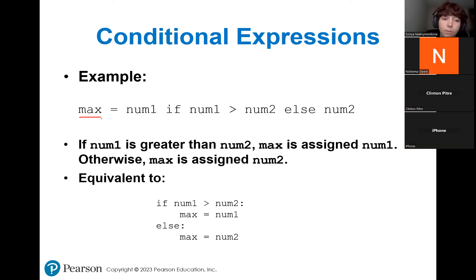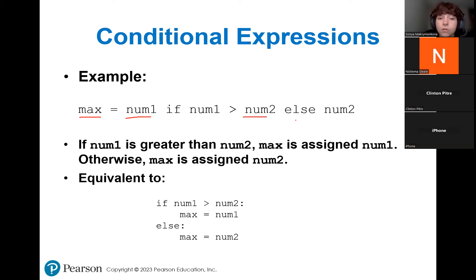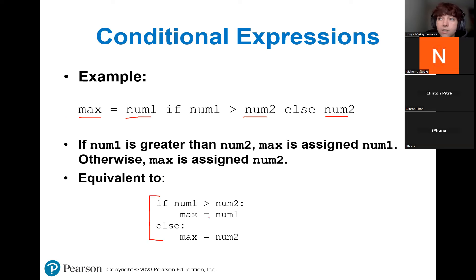Another example: we have a variable called 'max' and we assign it a number. If number one is greater than number two, max equals number one; else max equals number two. This conditional expression on one line is equivalent to a full if-else structure. Instead of writing four lines of code, you put it all on one line.